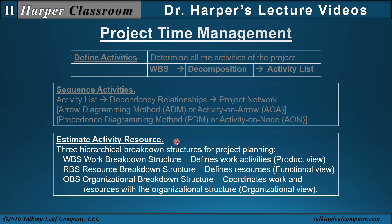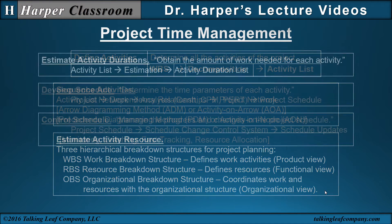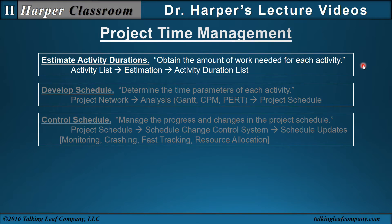Next we estimate activity resources. There are three hierarchical breakdown structures for project planning. First, the work breakdown structure, which defines the work activities — that's the product view. The resource breakdown structure defines the resources — that's the functional view. And then the OBS, the organizational breakdown structure, coordinates the work and resources with the organizational structure — that's the organizational view. The next major process is estimate activity durations: obtain the amount of work needed for each activity, going through an estimation process to determine the actual time or duration for each activity.